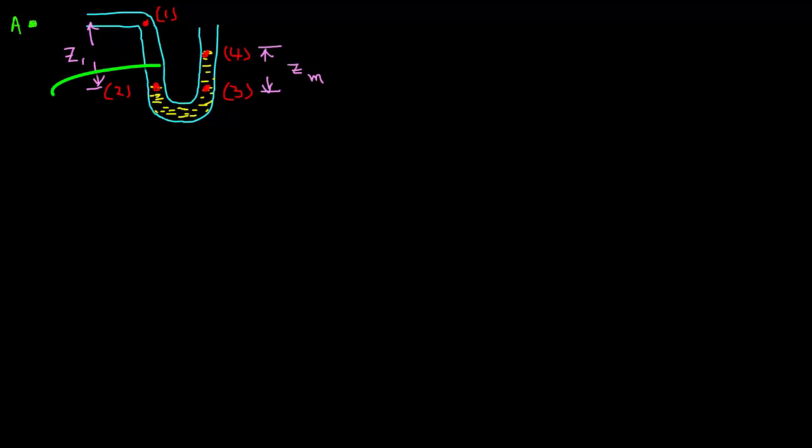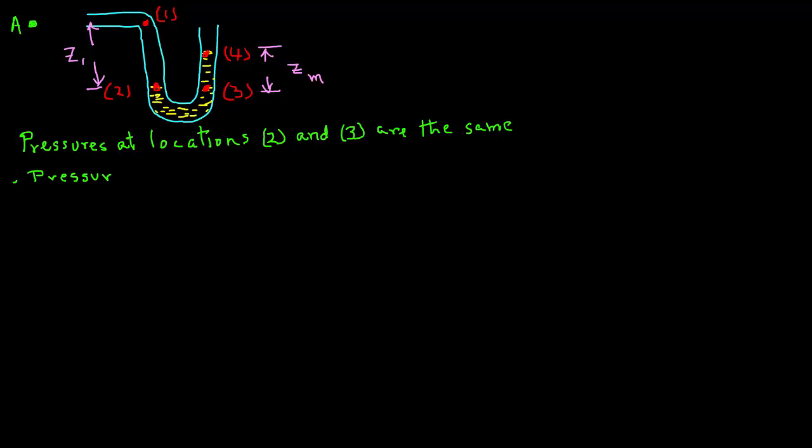It is easy to observe that locations 2 and 3 are at the same elevation. Therefore, the pressure at location 2 must equal the pressure at location 3. Let's use this fact to determine our equation for pressure. At location 1, the pressure will be the same as at location A, so it will be Pa.